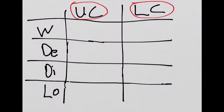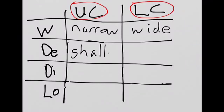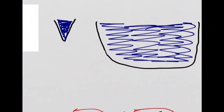If we come back to the table then, with regards to width, in the upper course the width of the river is narrow, in the lower course the width of the river is wide. In terms of depth, the upper course is shallow, and in the lower course the depth is deep. Both of these are represented in this simple diagram. This represents the upper course, and this diagram represents the lower course.